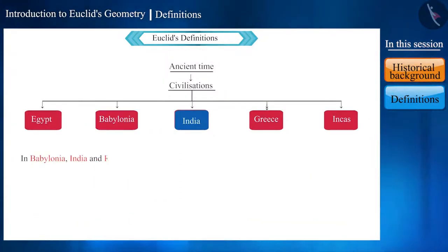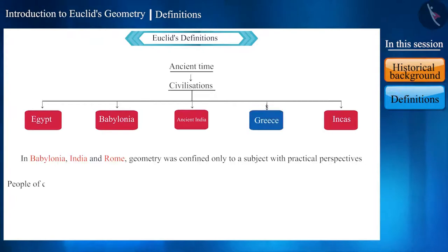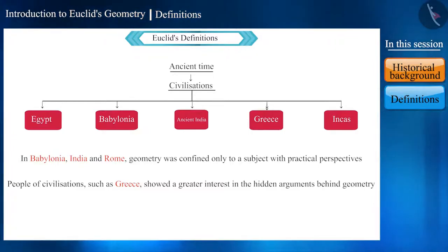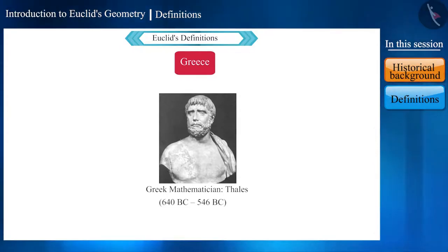We have been receiving information on geometry from one generation to the next, either orally or through written messages on copper plates. In some civilizations such as Babylonia, India, and Rome, geometry was confined only to a subject with practical perspectives.